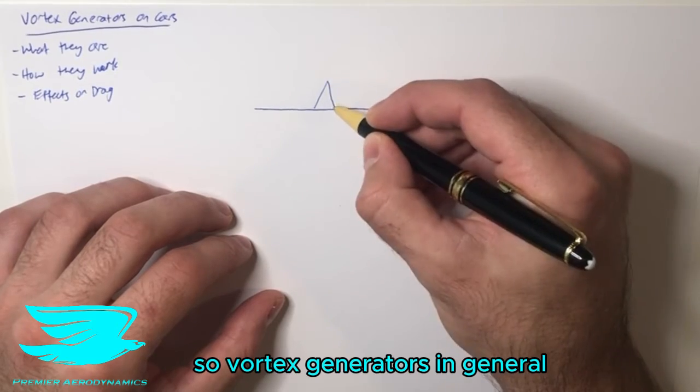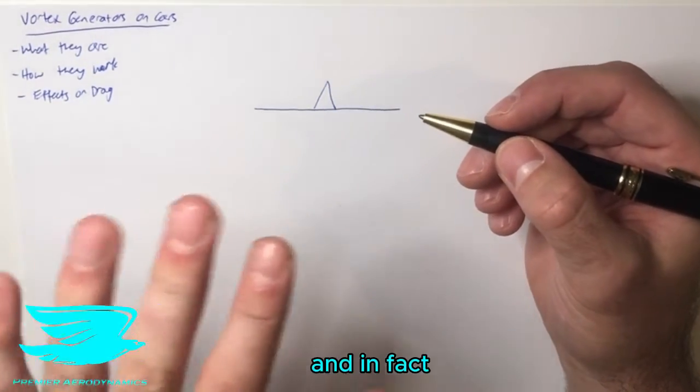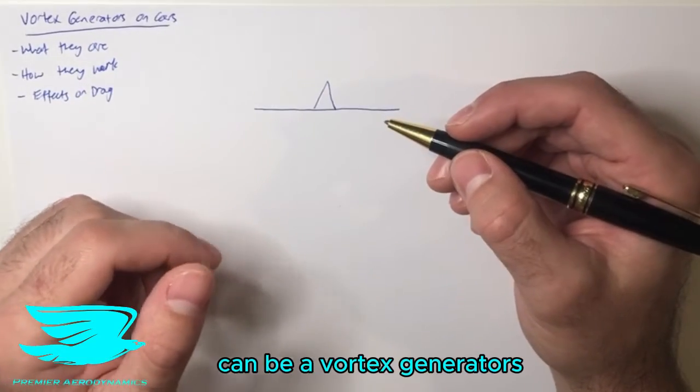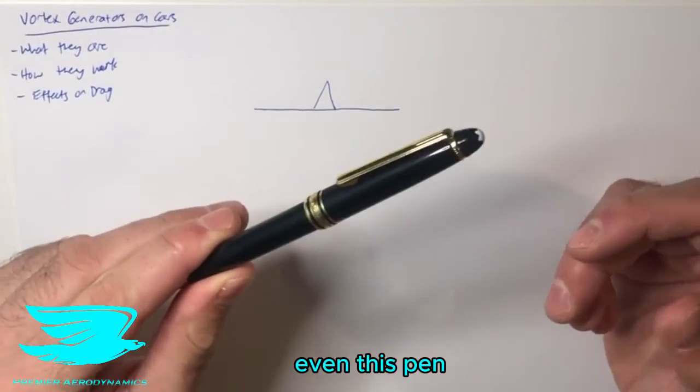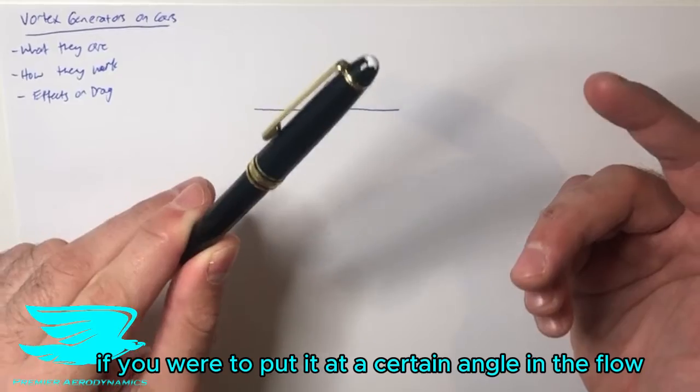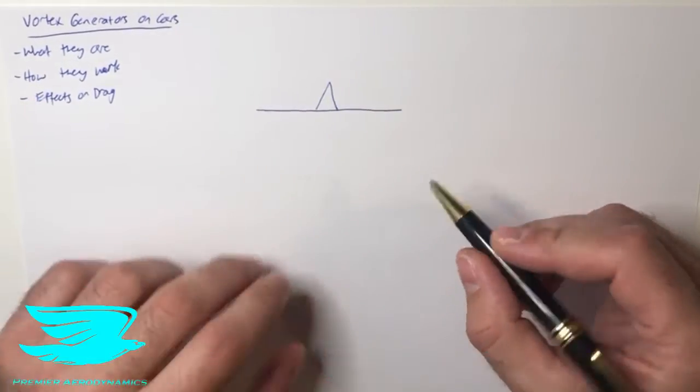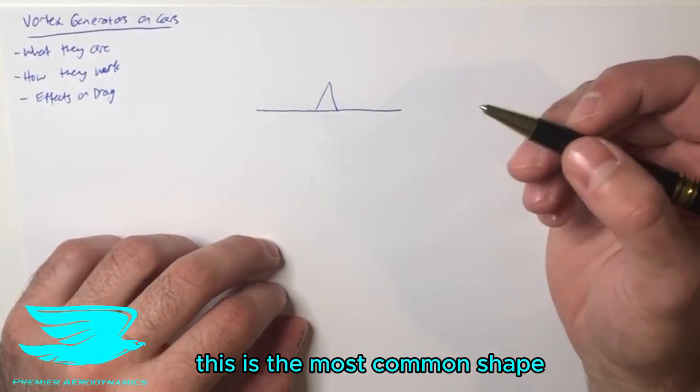Vortex generators in general can take on a bunch of different shapes, and in fact, pretty much anything can be a vortex generator. Even this pen, if you were to put it at a certain angle in the flow, will create a vortex. But generally speaking, this is the most common shape.